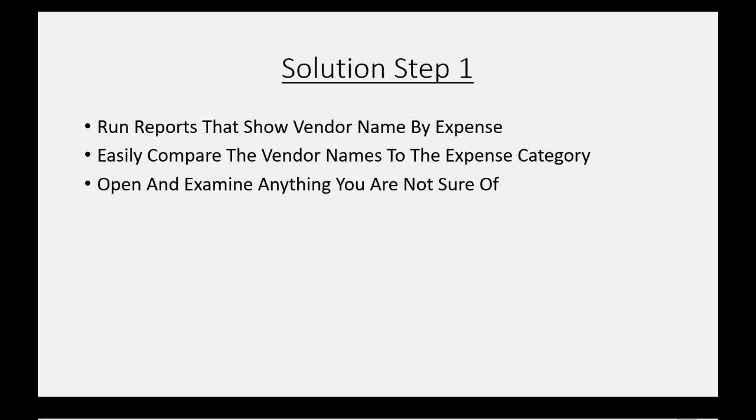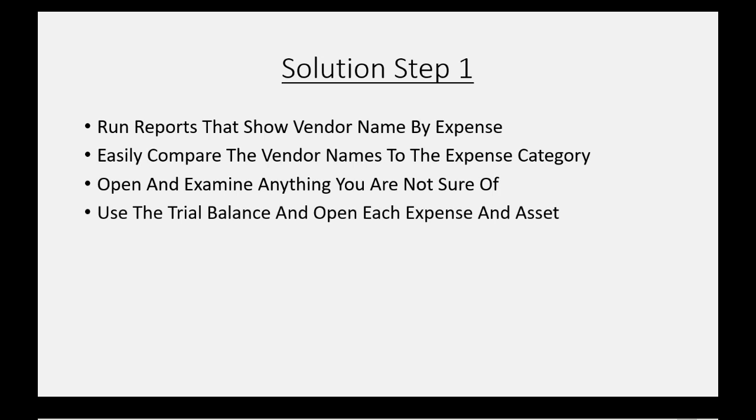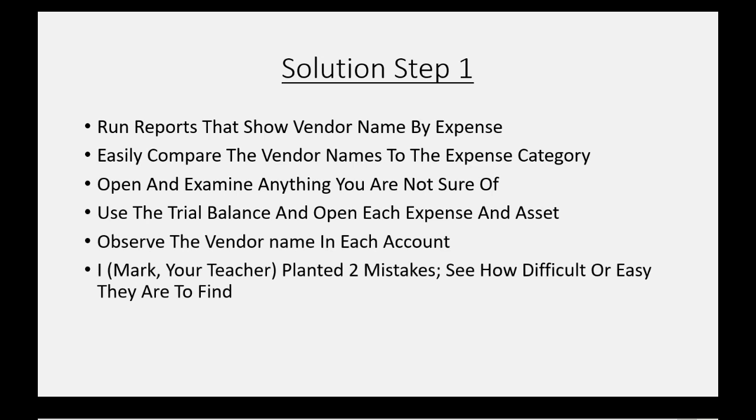So, what's the solution? Solution step one: we will run reports that show vendor name by expense. We will easily compare the vendor names to the expense category, and we will open and examine anything that we're not sure of. In this case, we will use the trial balance and open each expense and asset, observe the vendor name in each account. I, Mark, your teacher, actually planted two mistakes — let's see how difficult or easy it is to find using this method.